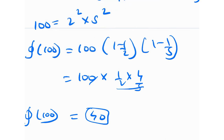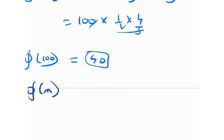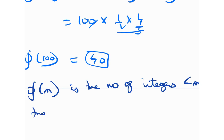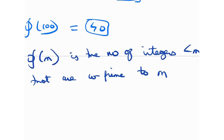What is the interpretation of phi(m)? phi(m) is the number of integers less than m that are coprime to m. So phi(100) = 40 means there are 40 natural numbers less than 100 that are coprime to 100. For example, 97 and 100 are coprime — gcd is 1 — and 97 is one of those 40 integers; there are 39 more.